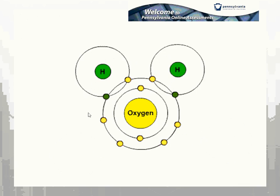What happens here is we have sharing between the two hydrogens and the oxygen. You can see we're sharing one electron, and oxygen is sharing one. So each hydrogen has its two electrons and is happy, and then oxygen has two, four, six, eight electrons in its outer shell — oxygen's also happy.